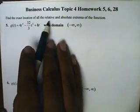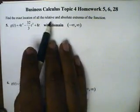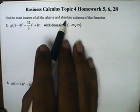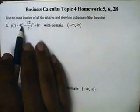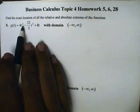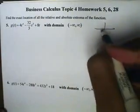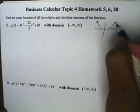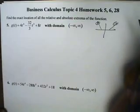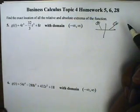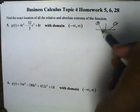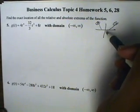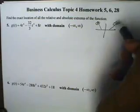We want to find the exact location of all the relative and absolute extrema of this function. Now, this function is positive, the leading coefficient is positive, and it's raised to the 4th power, which is even. That means that both ends will go upward, which means that we won't have an absolute max, maybe some relative mins and absolute mins and relative maxes, but no absolute maxes.